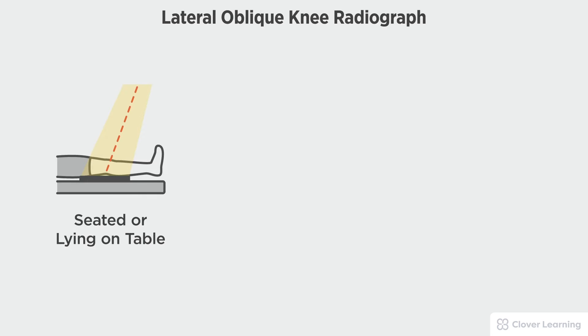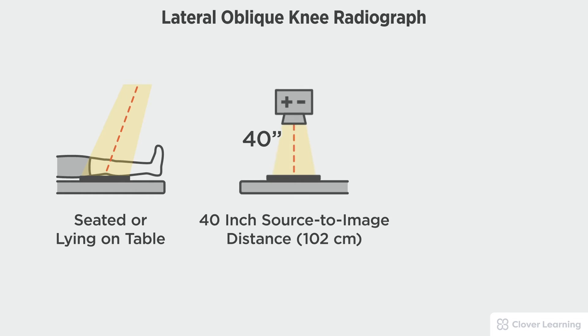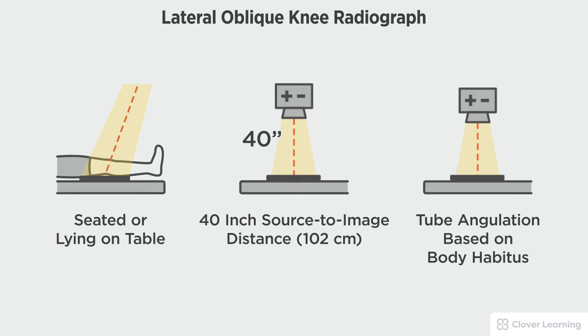In this view we will be demonstrating the lateral oblique rotation knee. The lateral oblique rotation knee radiograph should be performed with the patient seated or lying on the radiographic table, with the image receptor placed tabletop or in the bucky, a 40 inch source to image distance, and caudal or cephalic tube angulation based on the patient's body habitus.